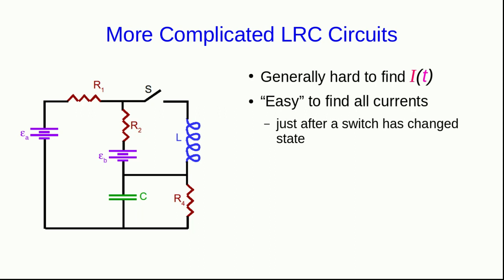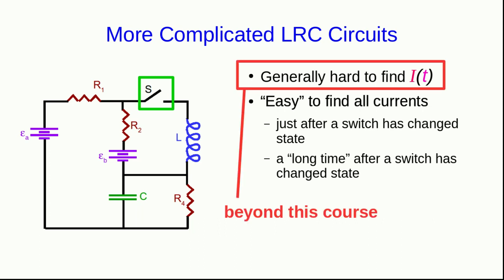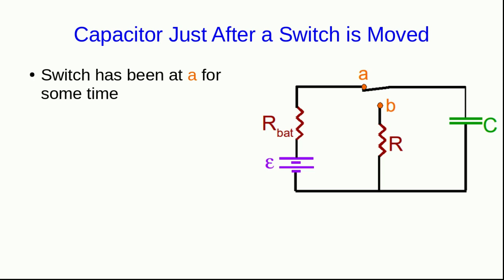One is just after a switch has changed state — for example, just after we close a switch or just after we open one. The other time when it's easy to find all the currents is when a switch has been open or closed for a very long time. The general problem of finding the current as a function of time is beyond this course, and you may see it in a more advanced circuits course. In this video lecture, we're going to focus on this easier problem, developing the ideas using simple circuits and then applying them to more complicated ones.